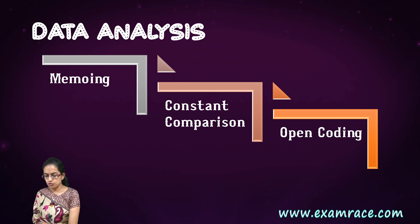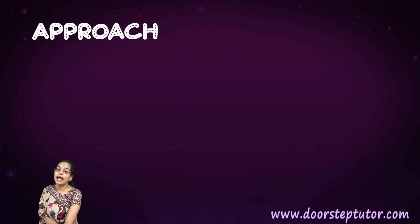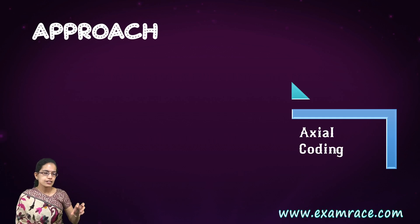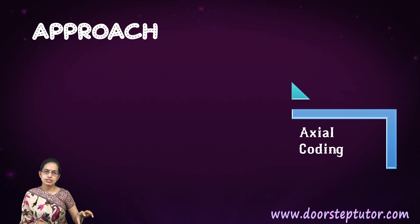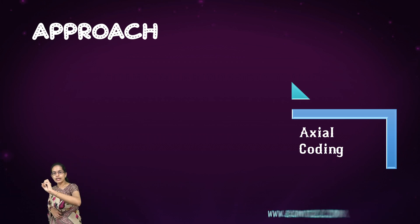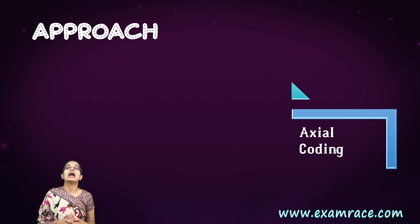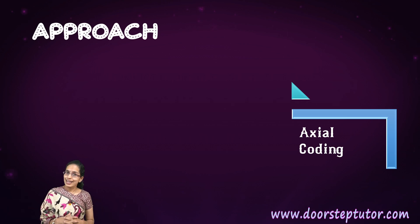Finally, we have an approach. What is this approach? With the open coding, we move to axial coding. Axial coding means that you see the various codes and various memos and you try to relate it. Rather than having just one criteria, I have two different criterias that I am trying to connect, and this is what is known as axial coding.